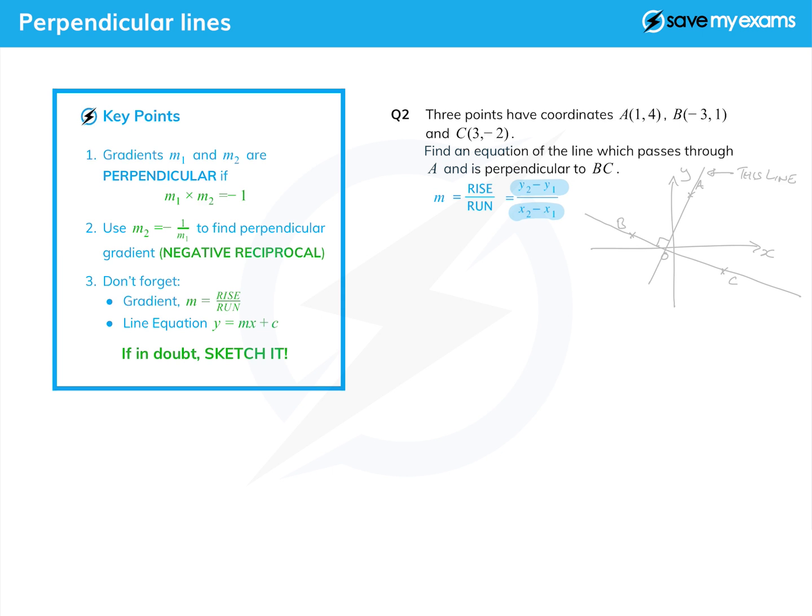Using our gradient formula, rise over run or the difference in the y's over the difference in the x's, I'm going to label my points B and C as x1 y1 and x2 y2 so I can put the numbers straight in the formula. The gradient of BC is y2 minus y1, so that's minus 2 minus 1 - make sure you're subtracting the same way, I'm doing C minus B here - and then 3 minus minus 3.